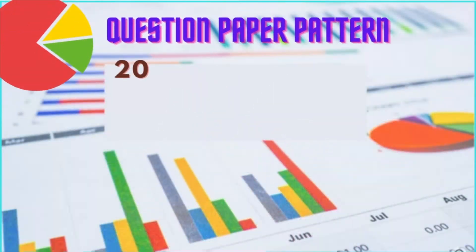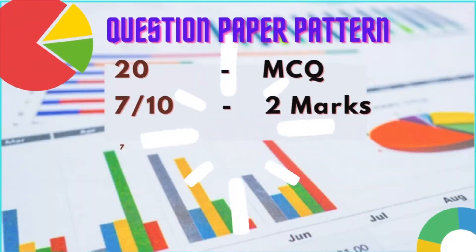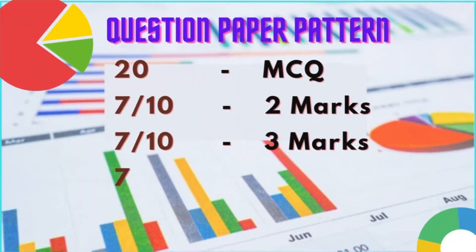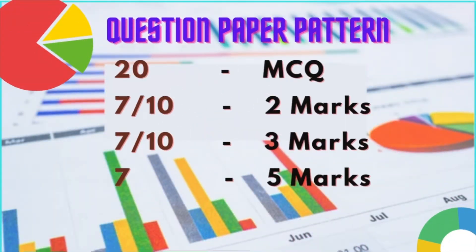Now let us move to the important thing — the question paper analysis. First, MCQs for 20 marks. Then you have 7 questions of 2 marks, 7 questions of 3 marks, and 7 questions of 5 marks. Totally it comes to 90 marks, and 10 marks for internal assessment.